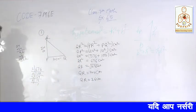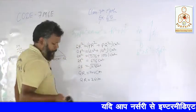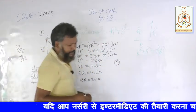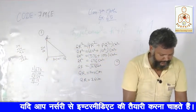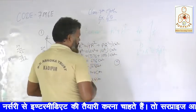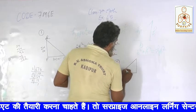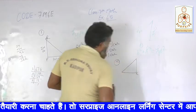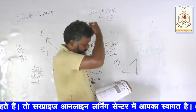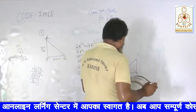Question 1 ka answer aa gaya: 26 cm. Okay. Hum same basis par aage badhte hain. Question number 2 kya keh raha hai? ABC is a triangle, right angle is at C.